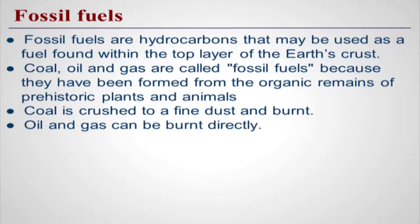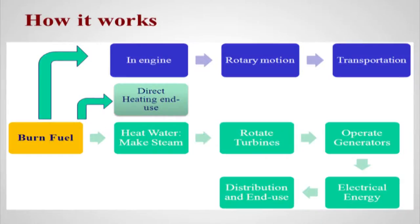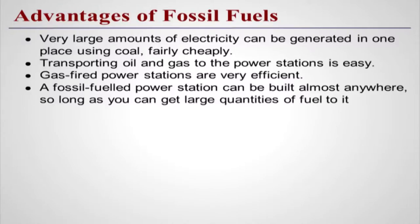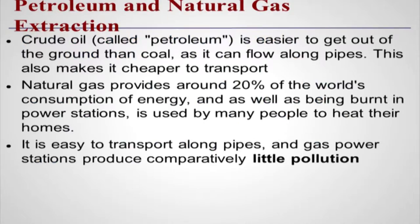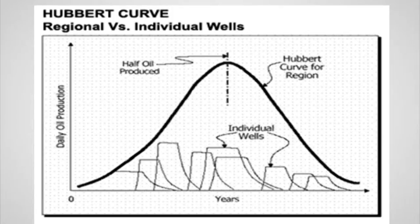I have given here an overview of fossil fuels which I am simply going to skip, but I will flash the slides before you. These are the ways we burn fuel and use it in engines, to generate electricity, or simply as heat. Petroleum and natural gas — how do we extract it? We have these rigs, which may be on land or offshore. This is the Hubbard curve — please note this down — peak oil. Your students might ask you what peak oil is and when oil production will peak.